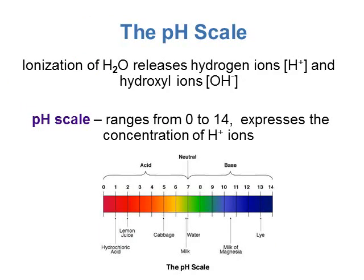All these different solutions can have different pHs. We have something called the pH scale. Normal water can ionize, releasing hydrogen ions and hydroxyl ions in equal amounts — this is considered neutral. On the pH scale, neutral is set at 7, and the scale ranges from 0 to 14. Anything less than 7 is considered an acid, like lemon juice. Anything above 7 is considered a base or alkaline solution, like milk of magnesia or lye.